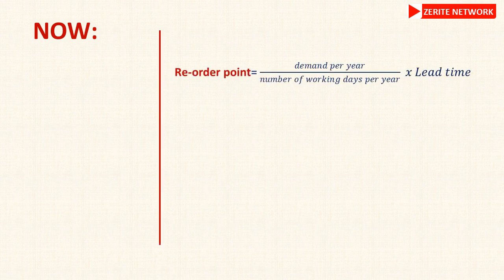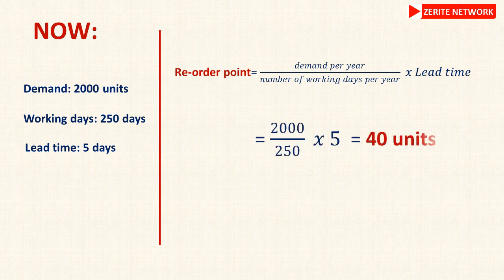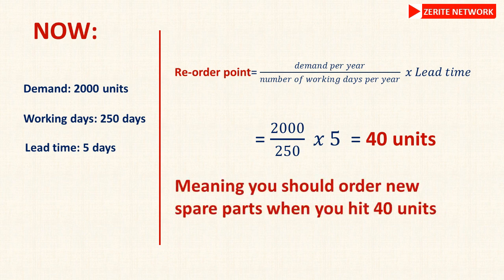To figure out your order point, use this formula: demand per year divided by number of working days per year, multiplied by the lead time. In our example, demand is 2,000 units, working days are 250, and lead time is 5 days. So: 2,000 ÷ 250 × 5 = 40 units. This means you should order new spare parts when your stock hits 40 units.